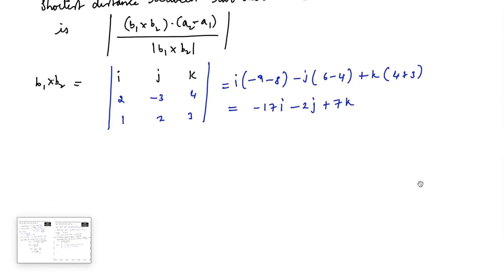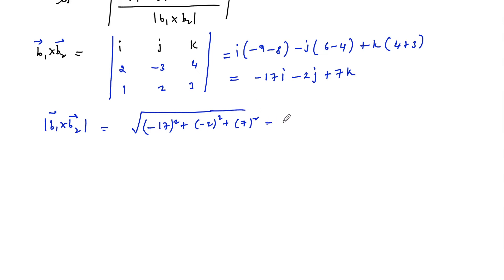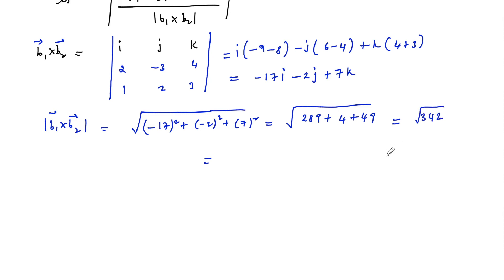The magnitude |b₁ × b₂| is the magnitude of the vector −17i − 2j + 7k, which equals √((−17)² + (−2)² + 7²) = √(289 + 4 + 49) = √342. This can also be written as 3√38.